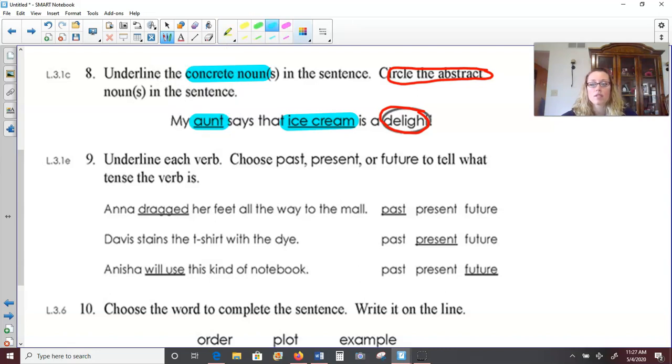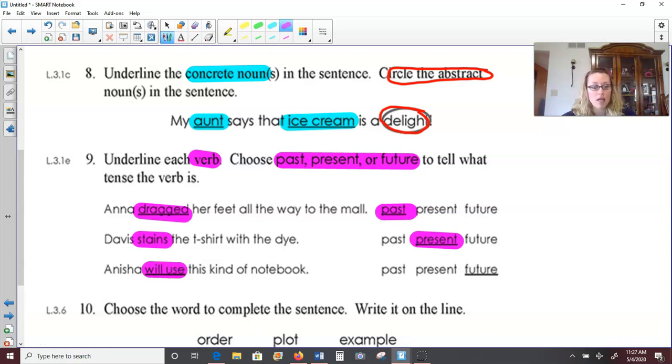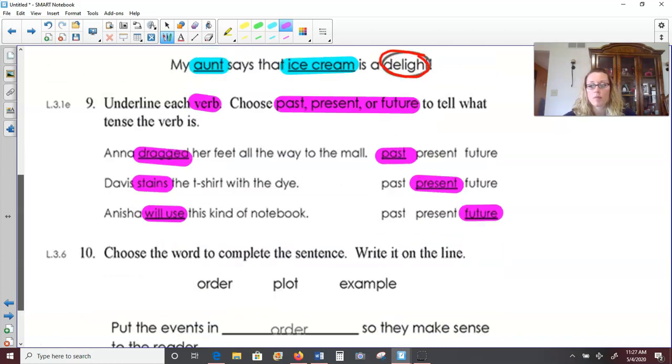Number nine wants us to underline each verb and then choose if it is a past, present, or future tense verb. Anna dragged her feet all the way to the mall. What did Anna do? She dragged her feet. And that would be past tense. The E-D is an indication that it's a past tense verb. Davis stains the t-shirt with the dye. What does Davis do? He stains the t-shirt. And that would be in the present tense, meaning he's doing it now. In number ten, or I'm sorry, the last sentence here, Anisha will use this kind of notebook. What will Anisha do? She will use. And will is the helping verb telling us it's happening in the future.